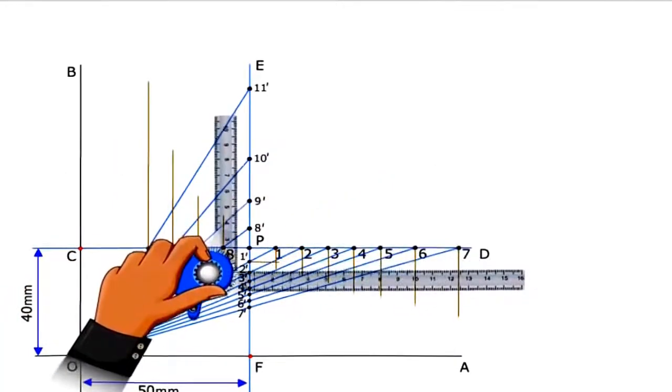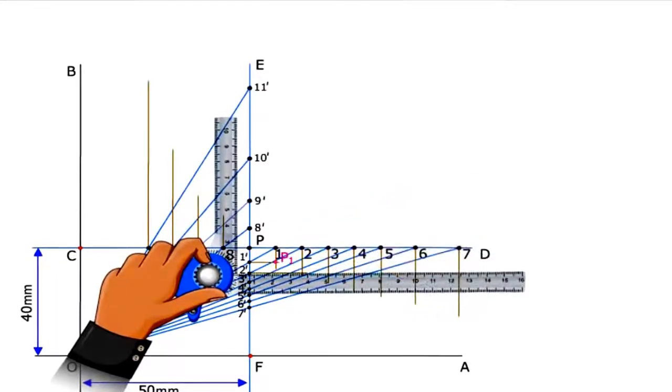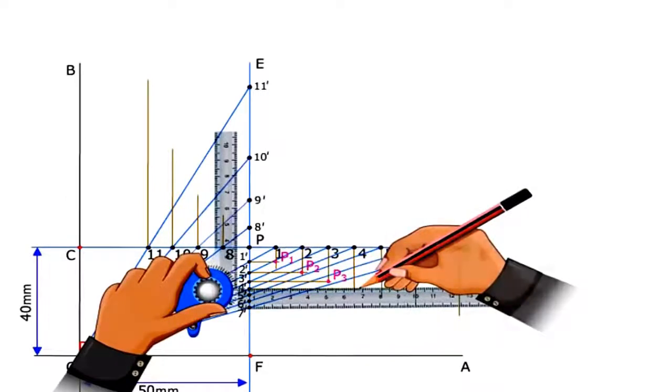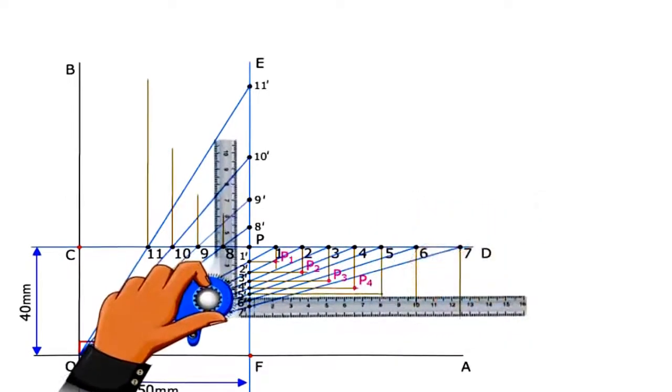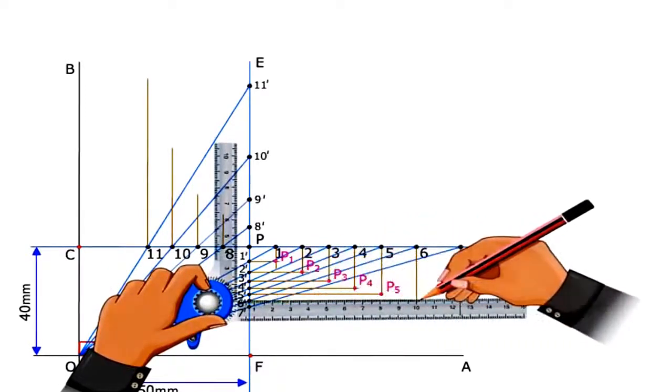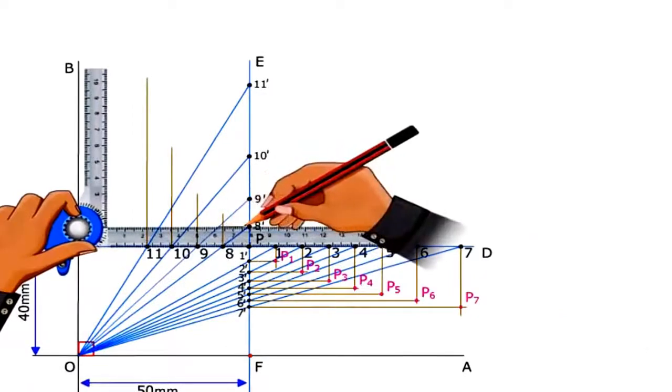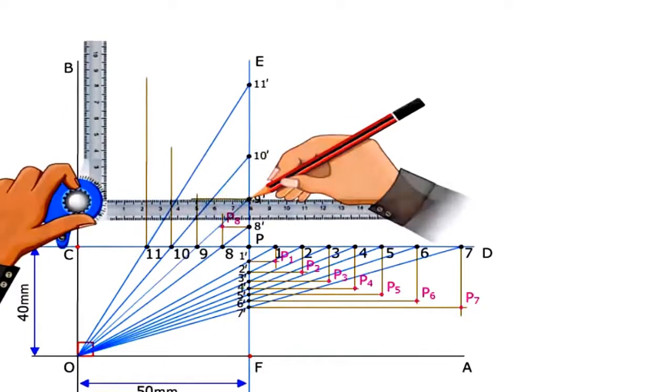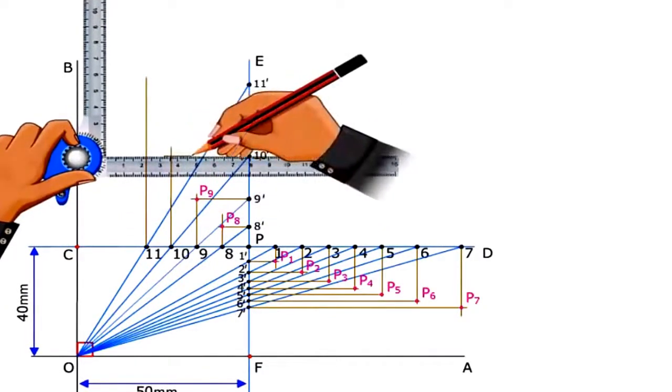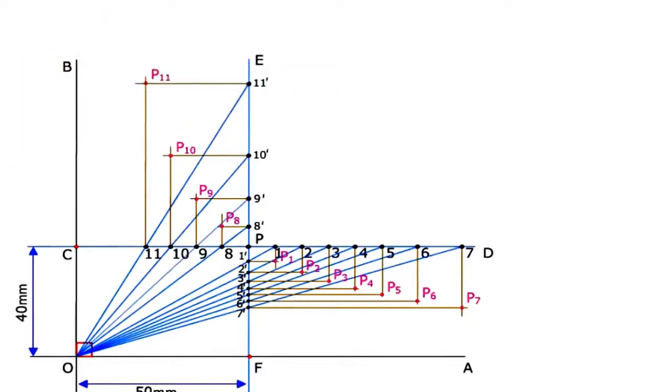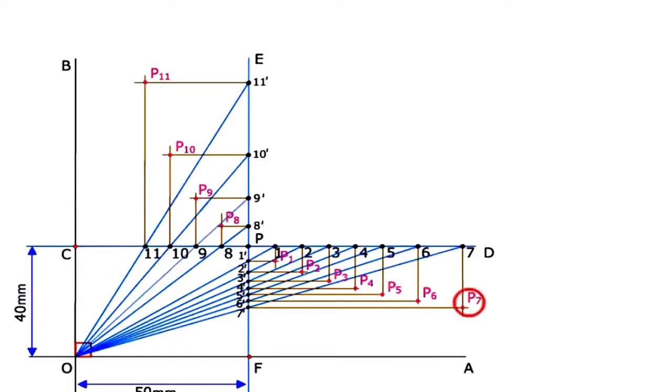Draw lines through 1 dash, 2 dash, 3 dash, 4 dash, 5 dash, 6 dash, 7 dash, 8 dash, 9 dash, 10 dash, 11 dash parallel to CD to intersect at P1, P2, P3, P4, P5, P6, P7, P8, P9, P10, and P11.